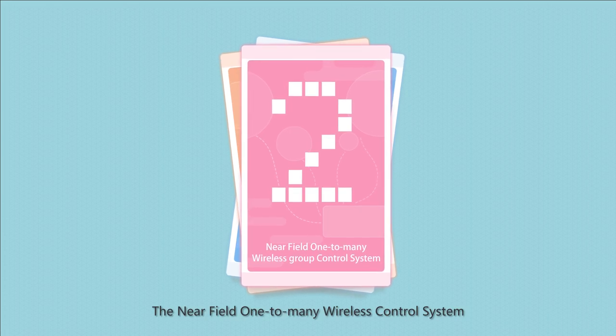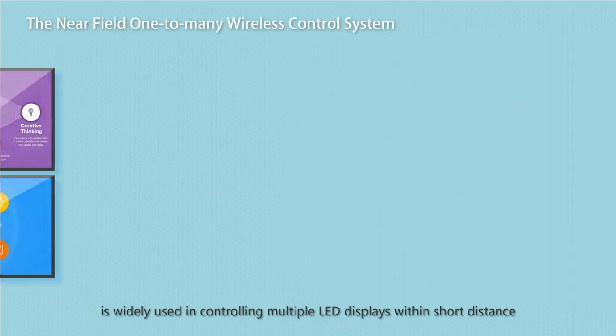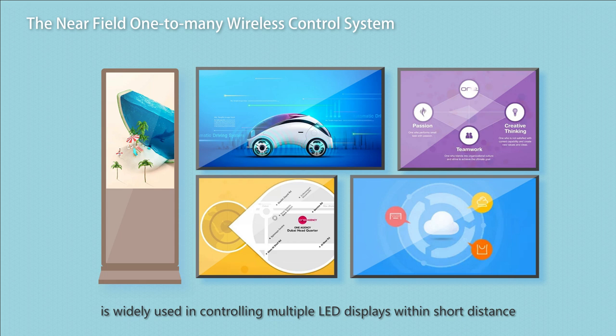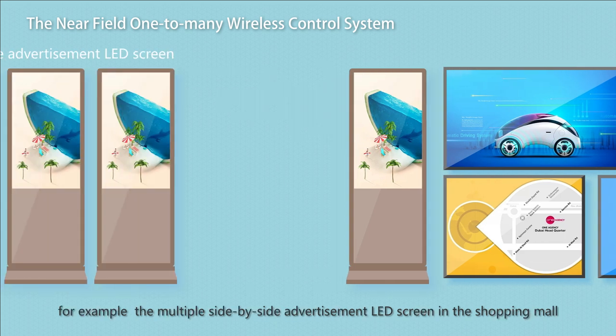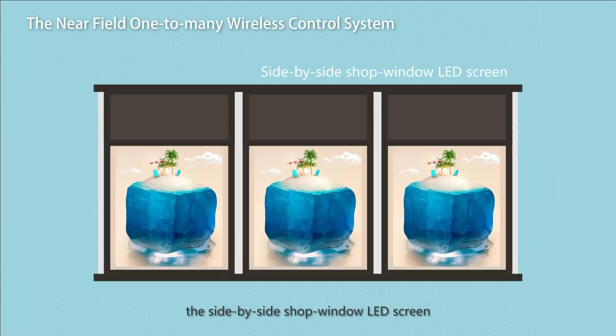The Near Field 1-to-Many Wireless Control System is widely used in controlling multiple LED displays within short distance. For example, multiple side-by-side advertisement LED screens in the shopping mall, or side-by-side shop window LED screens.